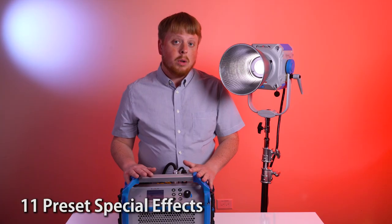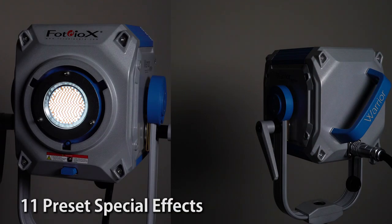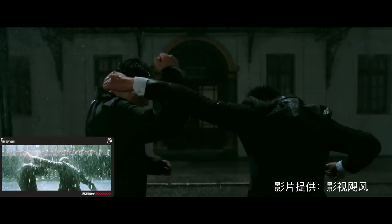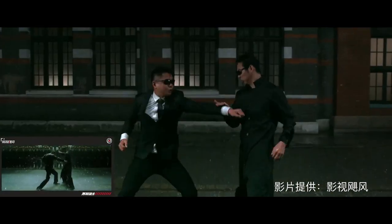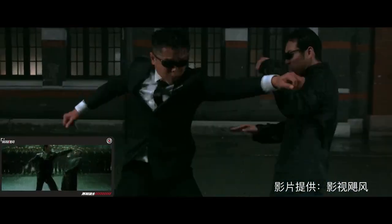That's right. It's got 11 built-in special effects, such as lightning and strobe. So if you need to animate the lights a little bit in your shot, we've got you covered with the special effects built into the control box.